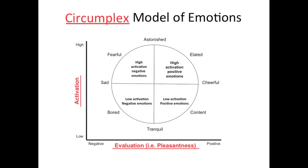This gives us a way of looking at how different emotions are related to each other. On the perimeter of the circle, we can see that sadness and fearfulness are very similar to each other, as are boredom and tranquility. The opposite of tranquil is astonished, the opposite of boredom is elation, and the opposite of cheerful is sad — so opposite positions on the circle represent opposite emotions.